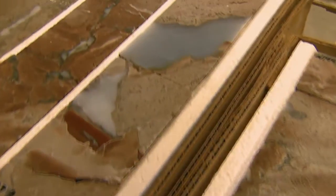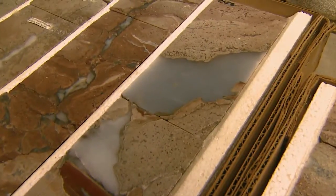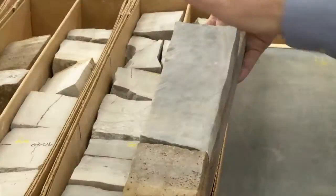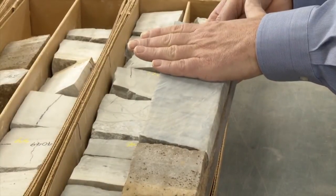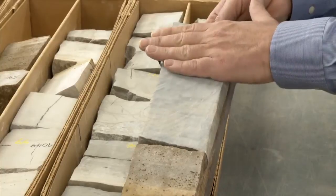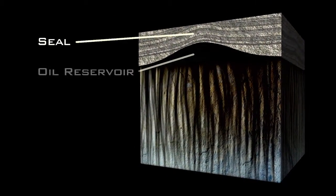If pores aren't connected, fluid and gas cannot move between the pores and that rock has low permeability. Those tightly closed rocks are called seals or cap rocks.